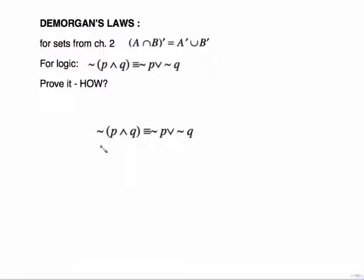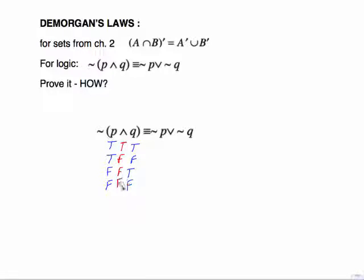We'll prove it the same way with a truth table. P is T, T, F, F. Q is T, F, T, F. P AND Q: the only time AND is true is if both are true, so only the first row is true and the rest are false. But I need the negation of that, which becomes false, true, true, true. That is my resultant column for the left side.